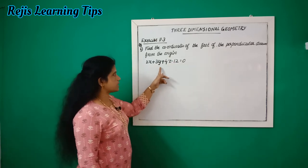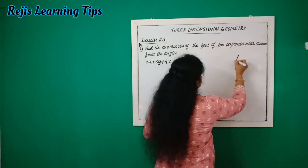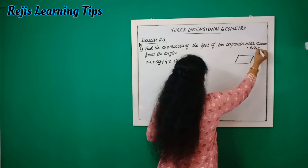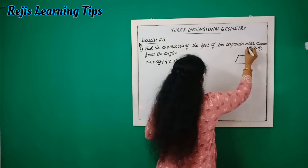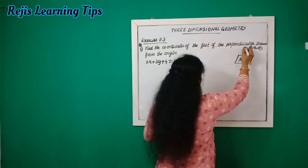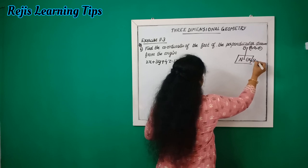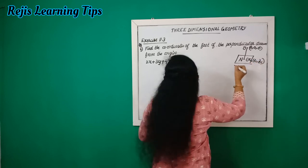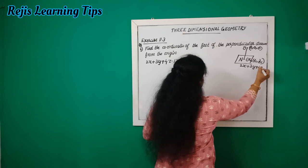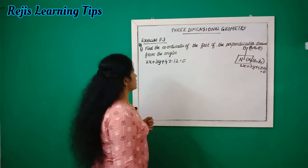The plane equation is 2x plus 3y plus 4z minus 12 is equal to 0. We are going to find the foot of the perpendicular drawn from the origin. Suppose the origin is O at (0, 0, 0), and the coordinate of N, the foot, is (x1, y1, z1).